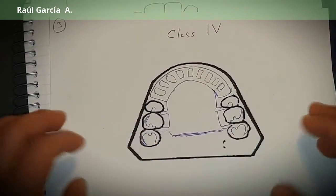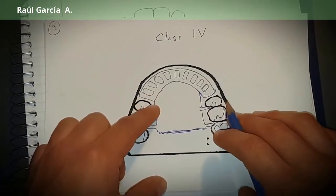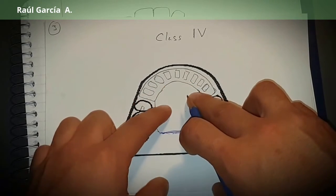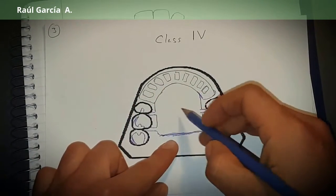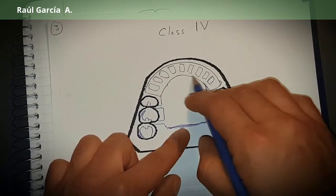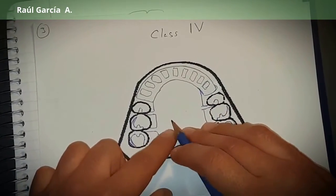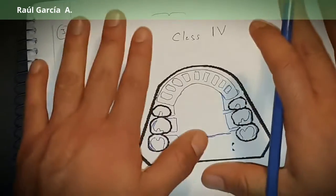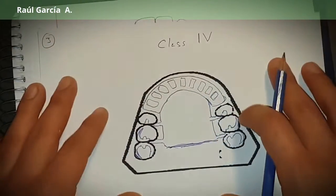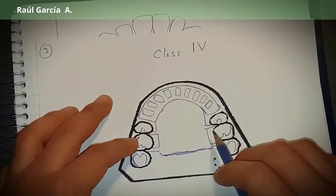I would recommend that you use a palatal plate whenever you start losing both canines. Just go with a palatal plate because you need more support, more area to support and to distribute the forces in a better and uniform way.